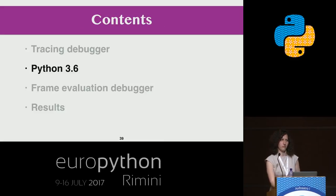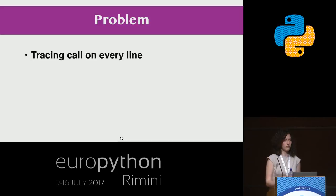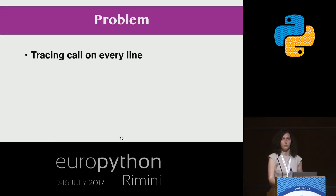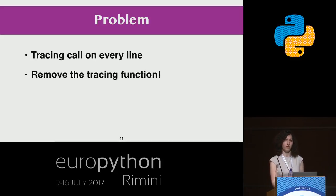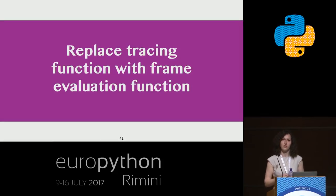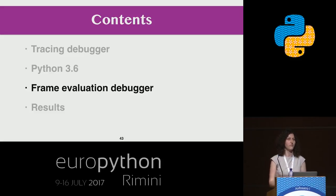We know about this new Python 3.6 feature. And remember that with the tracing debugger, the problem was calling the tracing function on every line. What can we do? We can't simply remove the tracing function or our debugger stops working. But we can replace the tracing function with our custom frame evaluation function, and build a frame evaluation debugger.